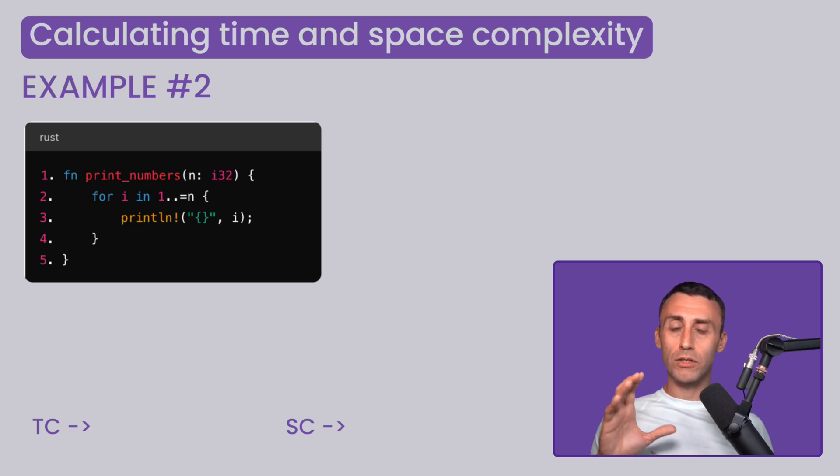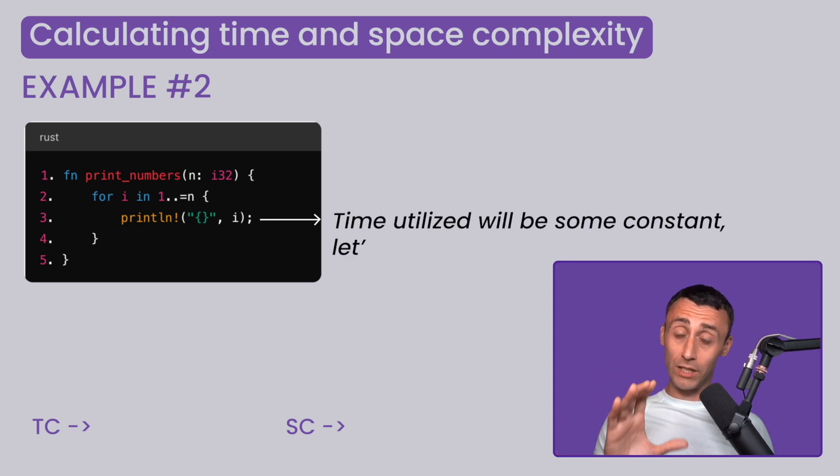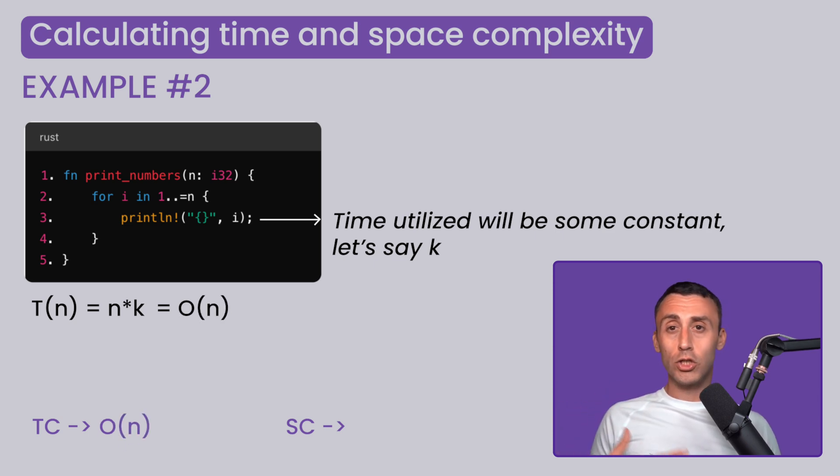The time taken for the print statement to execute will be some constant, let's say K, but this print statement will be executed n number of times. So the time complexity T of n equals K multiplied n. As we have seen in big O notation, this becomes big O of n. So the time complexity will be T of n equals big O of n here.